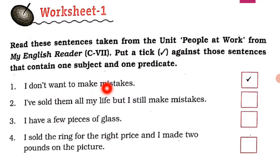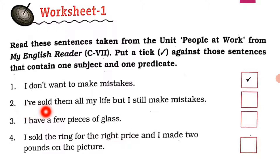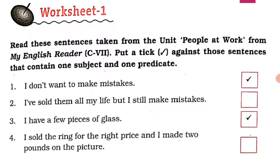Now, in sentence one we have one subject and one predicate — 'I' is the subject and the rest of the sentence is the predicate. In sentence two we have one subject and a predicate. In sentence three — 'I have a few pieces of glass' — again, 'I' is the subject.